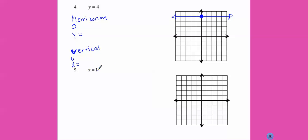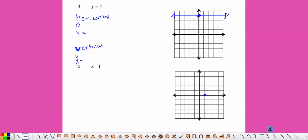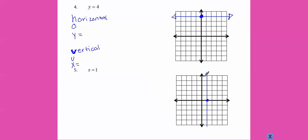If it's x equals 1, we go to where x equals 1. And x equals are vertical, so we draw a vertical line. Put our arrows on the end.